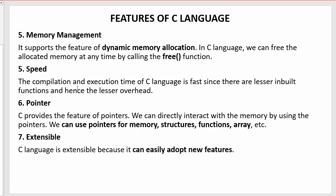The next feature is speed. The compilation and execution time of C language is fast since there are fewer inbuilt functions and hence lesser overhead. Compared to other high-level programming languages like Java, Python, and PHP, C has comparatively fewer inbuilt functions, which makes C compile and execute at a faster pace. Programs written in C will get compiled and executed within less time.